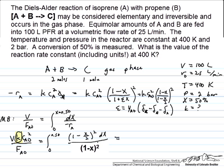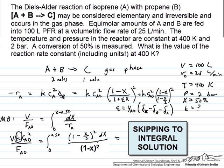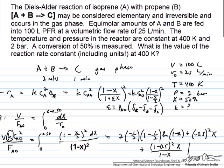You can look this up in a math book or in this case in the back of Fogler, the formula for solving this. It's in a typical integral table. We evaluate that from 0 to x equals 0.5.